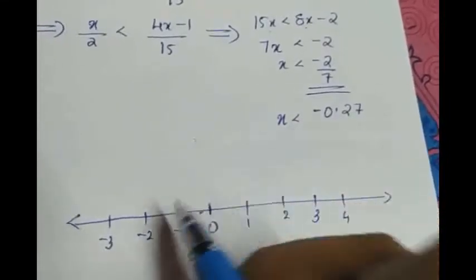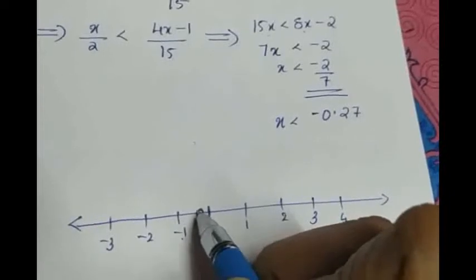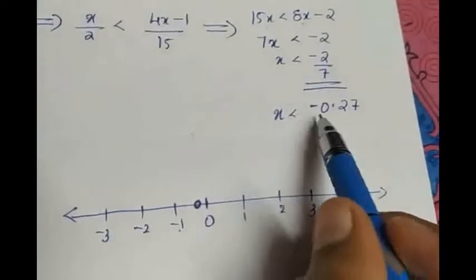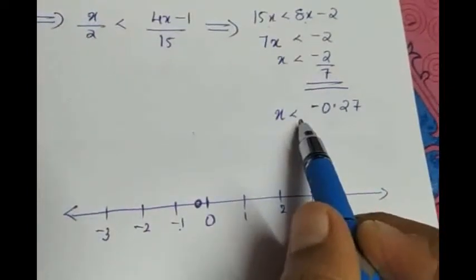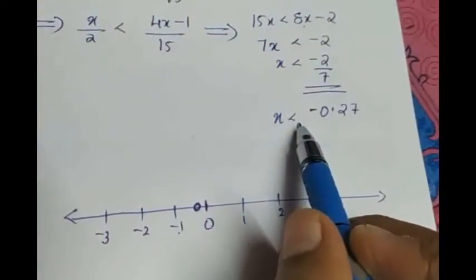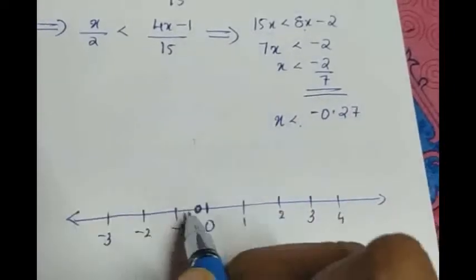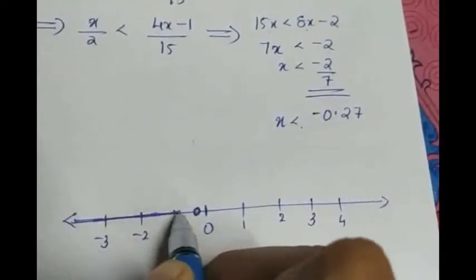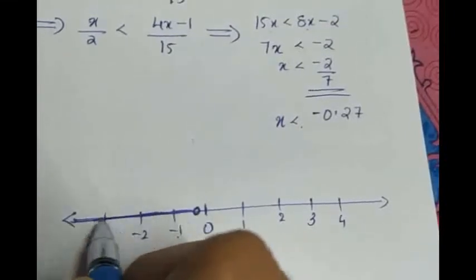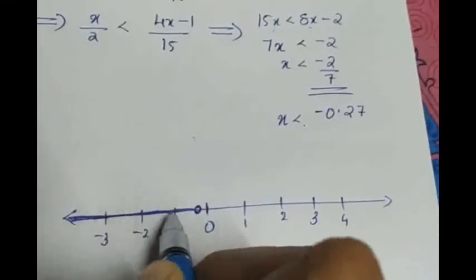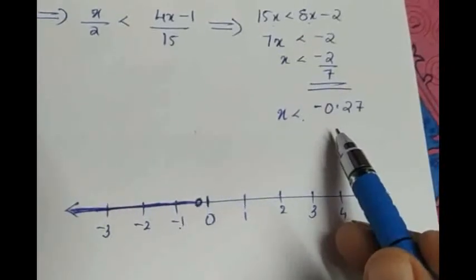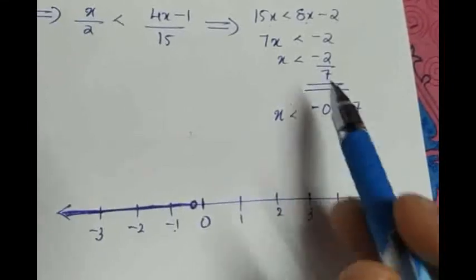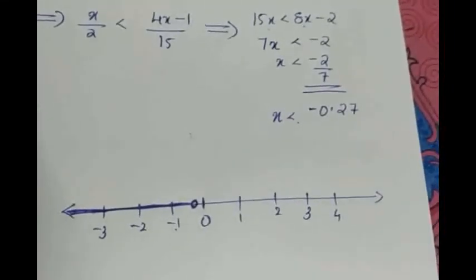So less than. We have to mark a hole there to show that number is not there. Less than, which side do we have to shade, right or left? Left. Less than stands for left side. So shade the real number line to show the solution. This represents the graph of this solution: x less than negative 0.27, otherwise x less than minus 2 by 7.